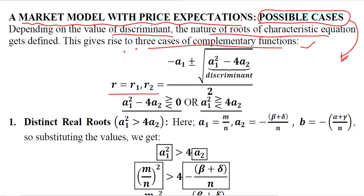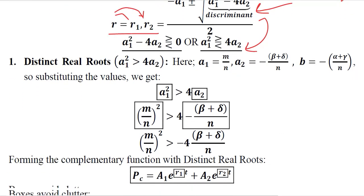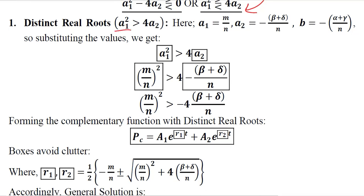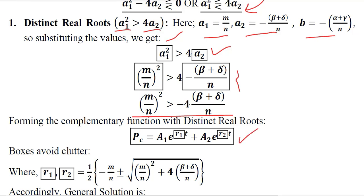This is the root and its conjugate form, R1 and R2. This is the discriminant which determines the nature of the roots. For the first possibility, we have a positive discriminant — in other words, the first term is greater than the second term. We have the values of a1, a2, and b from the last video. Putting the values of a1 and a2 gives us this expression, which is the formula for the complementary function in the distinct real root case, where R1 and R2 are the two values.